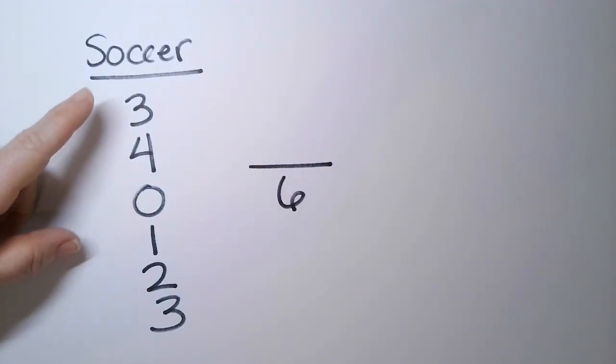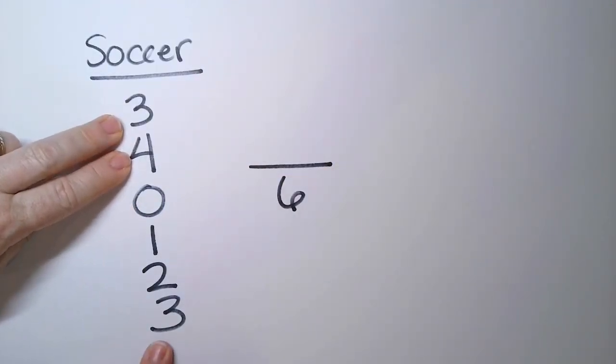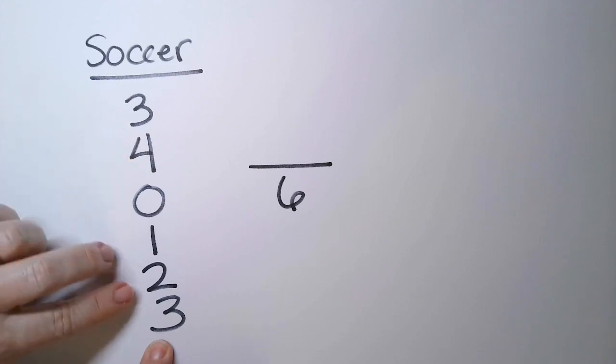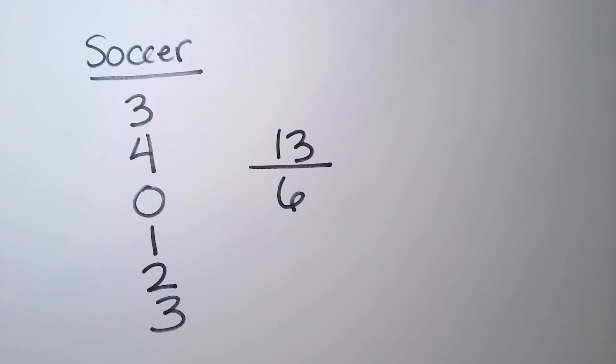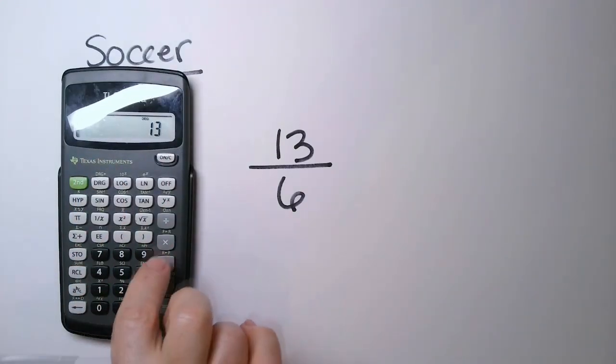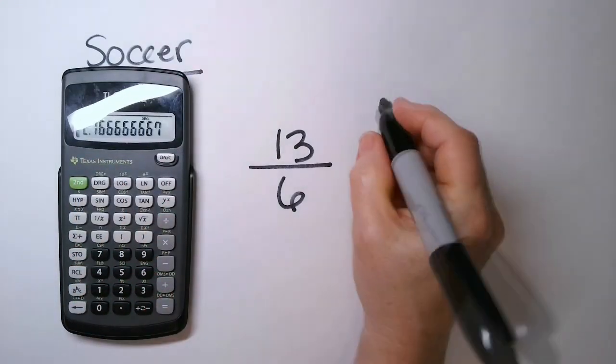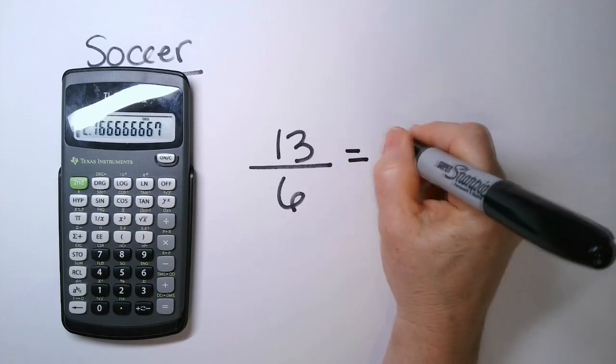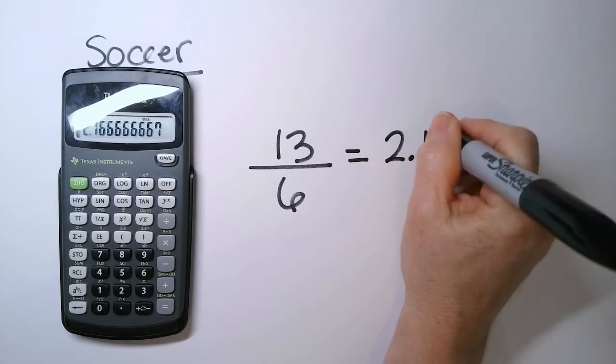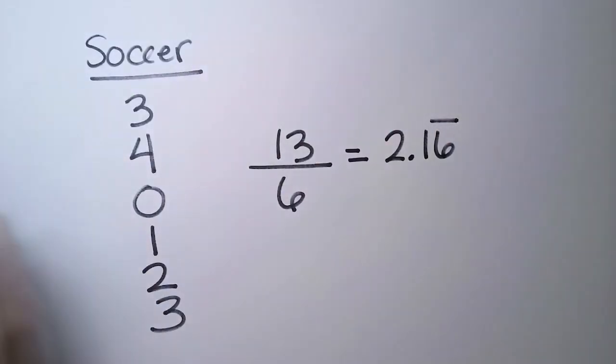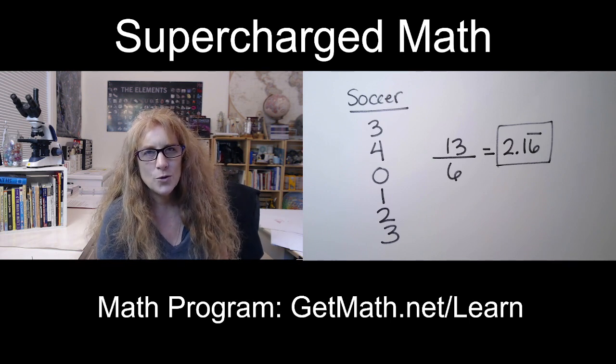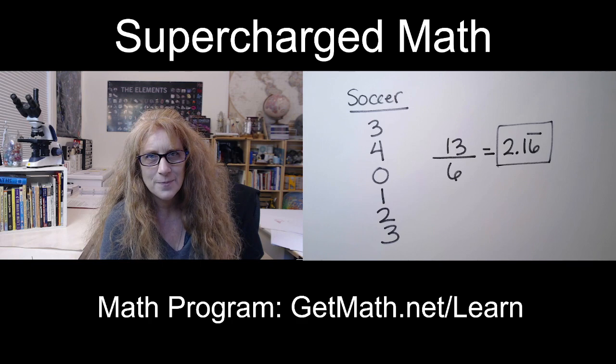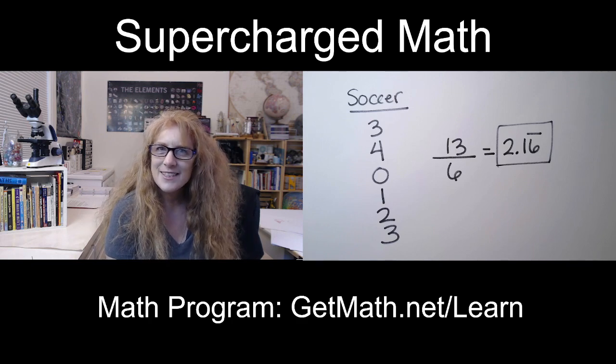And then I'm simply going to add them. Three and four make seven. Add this three as a ten. Add a one and two, which is three. So I have a thirteen. So thirteen divided by six is 2.16. So my average is that I am scoring a little more than two goals every single game. Are you starting to see how easy this is to do?